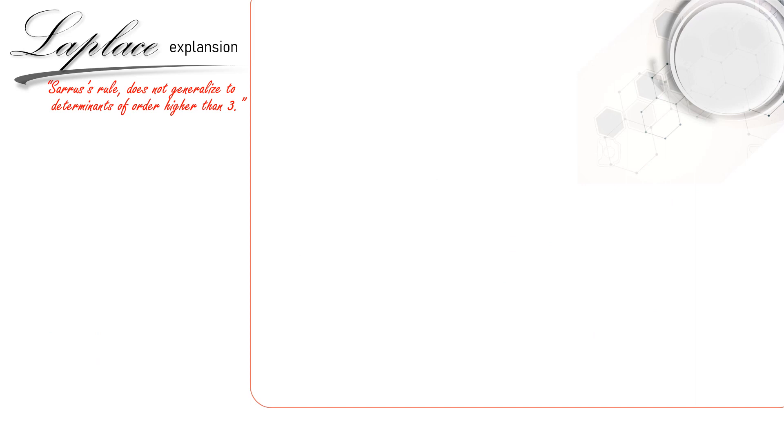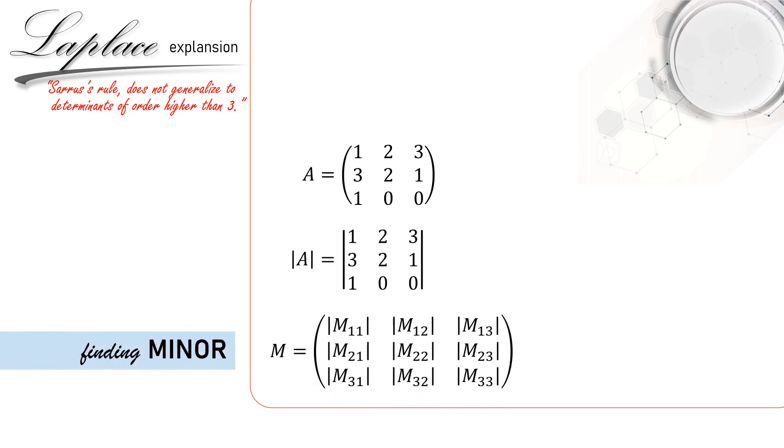To make it clearer, let us see the illustration. Let's have this 3x3 matrix again with numerical example. The determinant is expressed like this. And this is the minor matrix. Now we try to find M11 here. In determinant A, we delete row 1 here and column 1 here. So this is M11 is equal to 0.